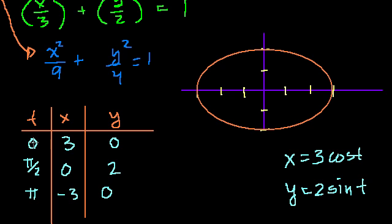Let's plot these points. When time is 0, we're at the point 3 comma 0, right there. This is t equals 0. When t increases by pi over 2, we're at 0 comma 2, right over here. This is t equals pi over 2. When t increases a bit more, when t equals pi, we're at minus 3, 0, right here. This is t equals pi, or 3.14159 seconds.